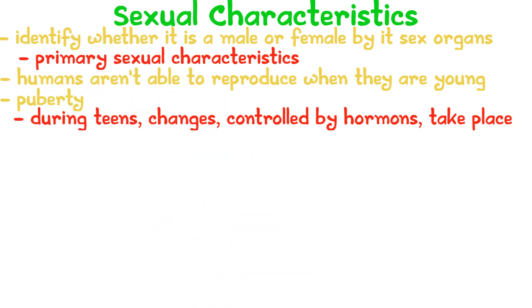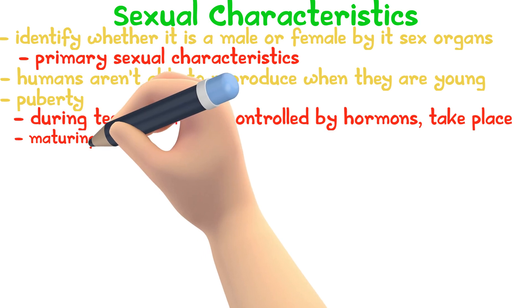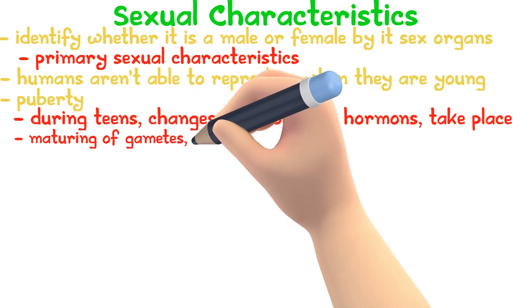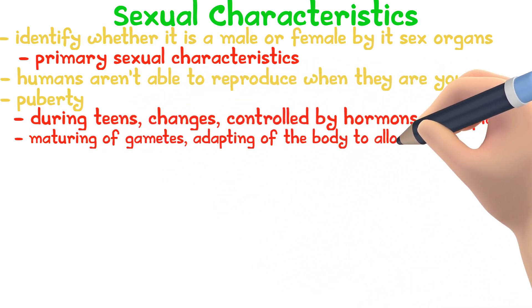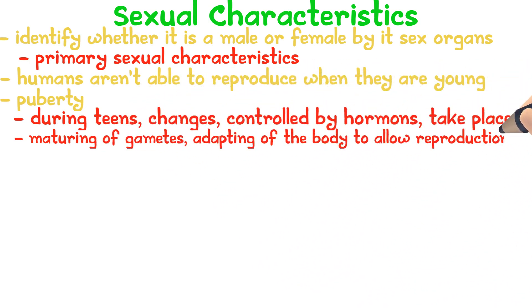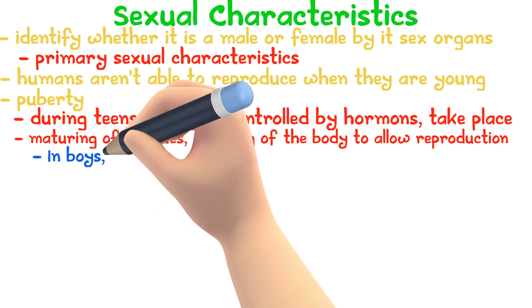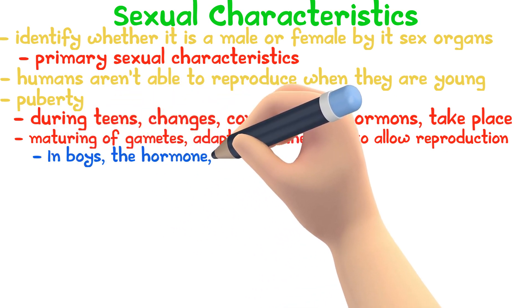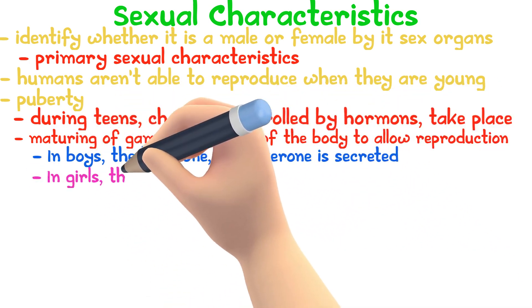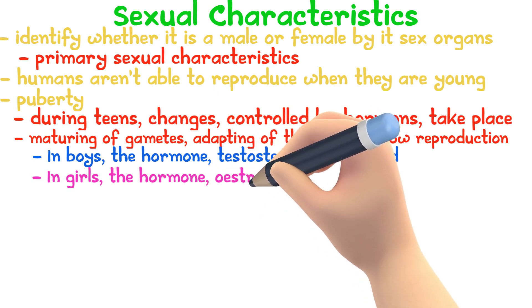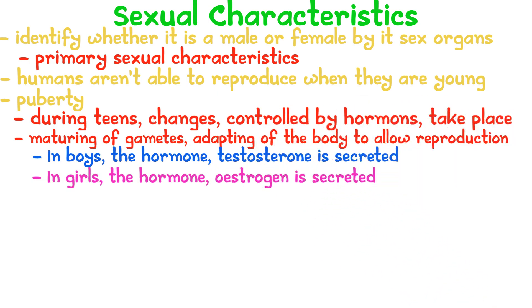Puberty involves the maturity of the gametes and allows the body to adapt to reproduction. In boys, the hormone testosterone is secreted, and in girls, the hormone oestrogen is secreted.